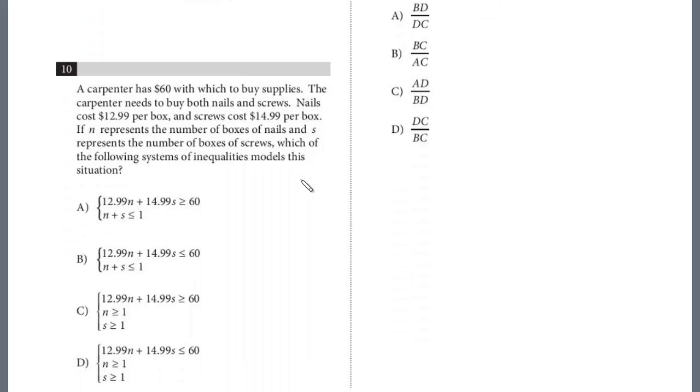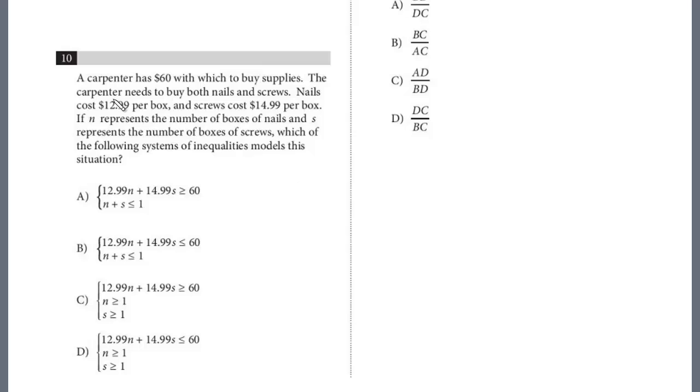All right, let's take a look at question number 10. A carpenter has $60 with which to buy supplies. The carpenter needs to buy both nails and screws. Nails cost $12.99 per box. Screws cost $14.99 per box. If N represents the number of boxes of nails and S represents the number of boxes of screws, which of the following systems of inequalities models this situation?